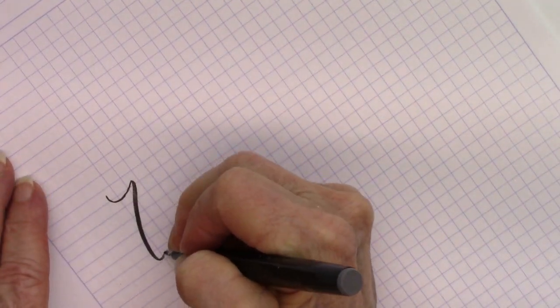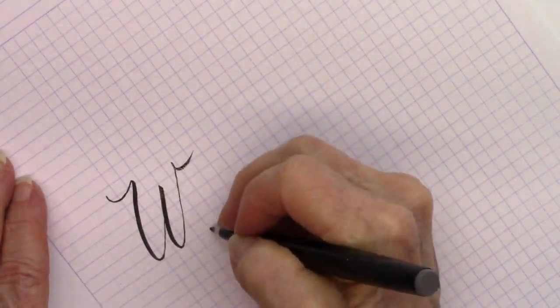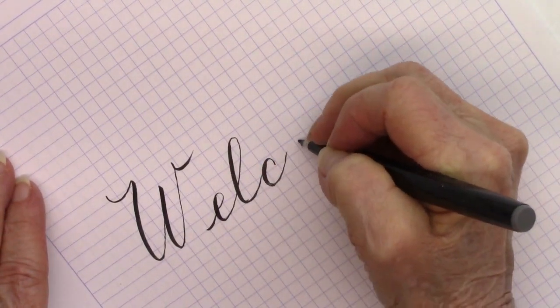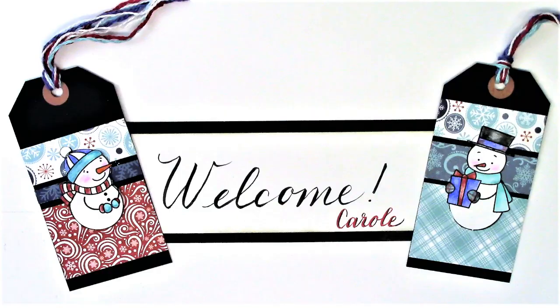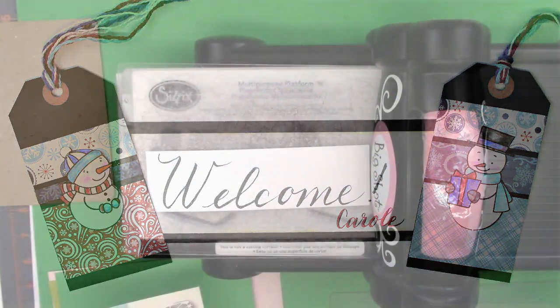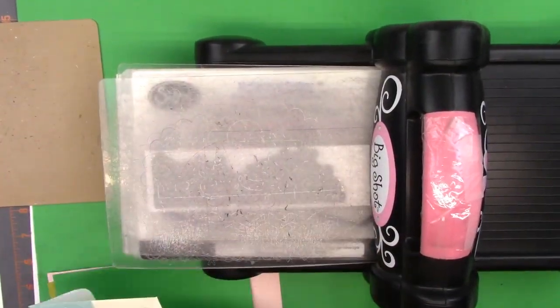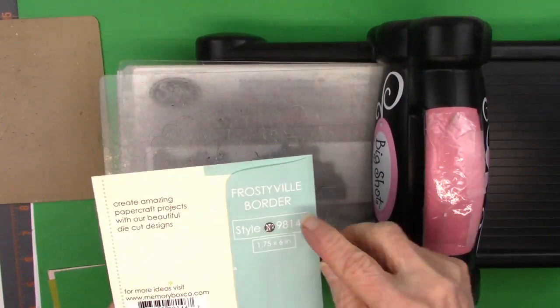Hi everybody, Carol here. Welcome to my YouTube channel. Today I'm going to be making a card that's mostly from the Simon Says Stamp January 2019 kit, but I'm going to add a couple of other things, for example, this die right here that's from Memory Box and it's called Frostyville Border.